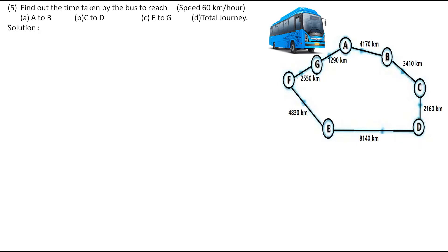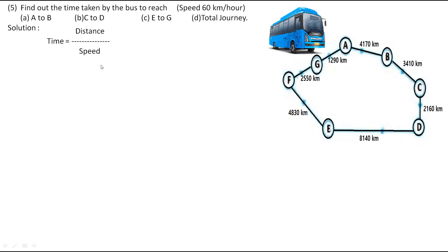The next question is: find the time taken by the bus to reach A to B, C to D, E to F, and for the total journey. They have given the speed as 60 km per hour. Now to find time we have to use the formula: Time = Distance / Speed. We must know the distance as well as speed, then we can find out the time. They have given us both, so we can easily find the time.